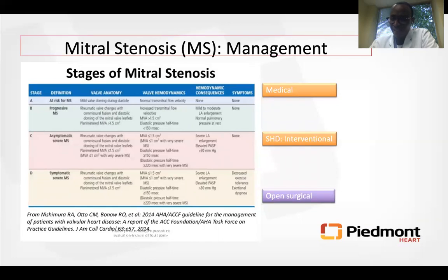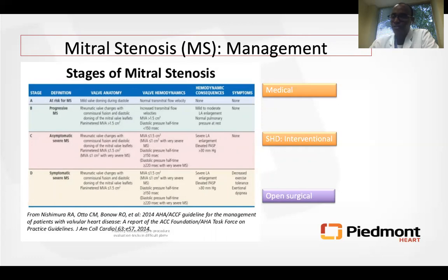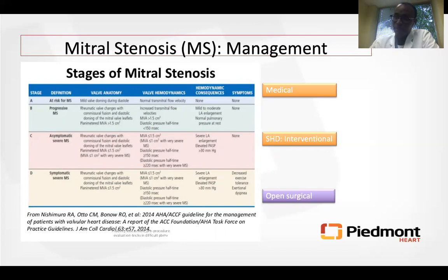Management of mitral stenosis starts with medical therapy — stabilize the patient, treat pulmonary edema, and optimize beta-blocker therapy, because tachycardia is the enemy of this patient. The problem with mitral stenosis is diastolic: the valve is too tight to open in diastole, so if the patient becomes tachycardic, there is insufficient diastolic time to fill the ventricle, causing flash pulmonary edema. However, mitral stenosis is a mechanical problem — diuretics and other medical therapies will not reverse severe mitral stenosis. Intervention — percutaneous or surgical — is required.